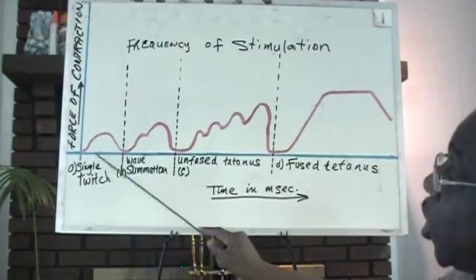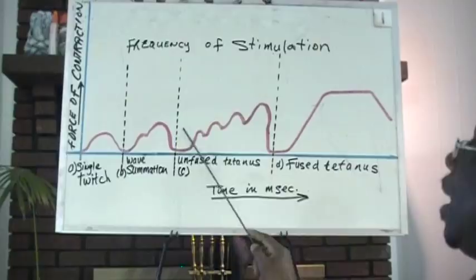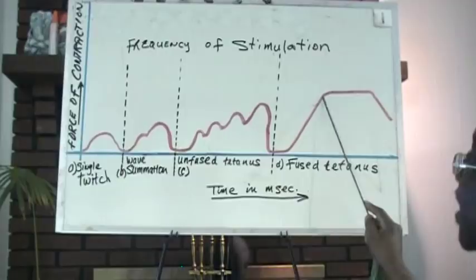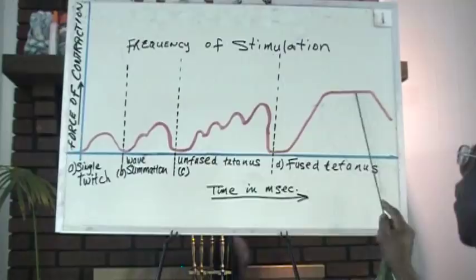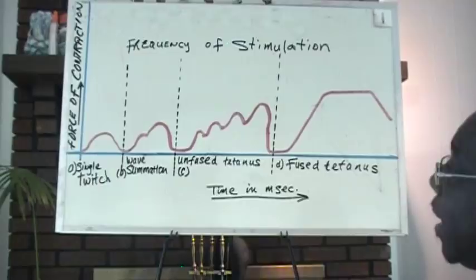What I want you to know for tomorrow is the difference between a twitch, what is wave summation, a type of summation called unfused tetanus, and to understand that this is a sustained contraction because of high frequency of stimuli. This point, therefore, is tetanus. And from this point onwards, this is fatigue.